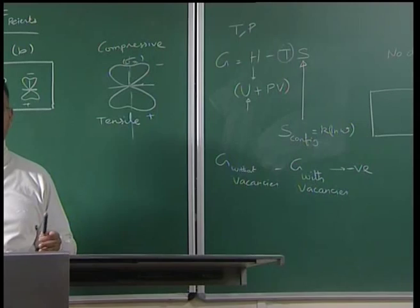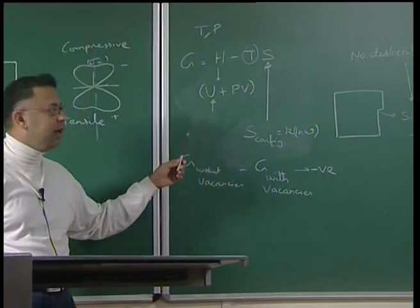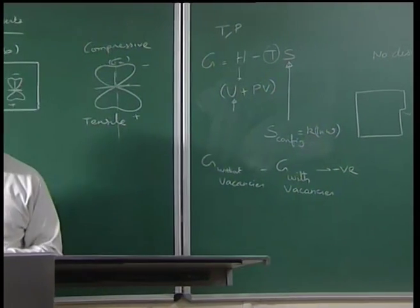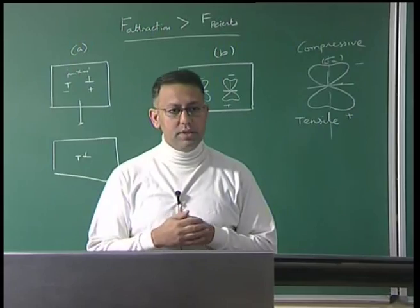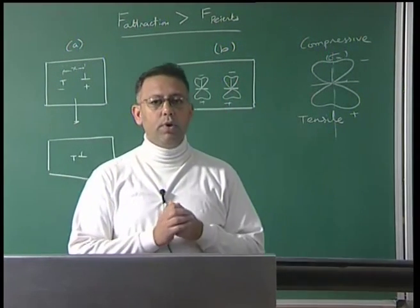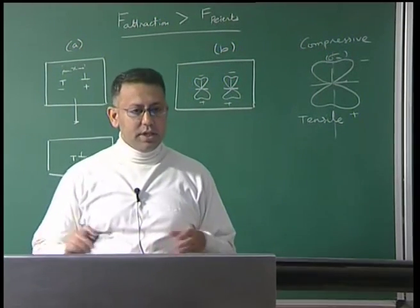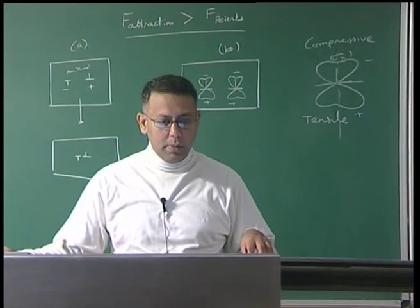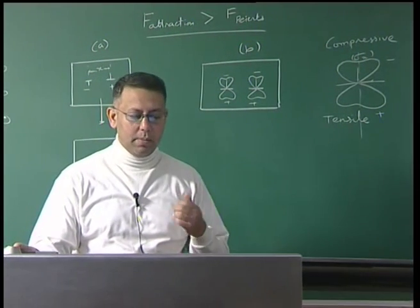If H - TS is negative, that implies vacancies are stable. We are talking about a certain fixed number of vacancies that leads to a minimum in the Gibbs free energy function. Hence, in the presence of vacancies, the Gibbs free energy can actually be reduced compared to a state with no vacancies at positive Kelvin temperatures — room temperature, 200°C, etc. — giving an equilibrium concentration of vacancies which are stable, making vacancy a thermodynamically stable defect.